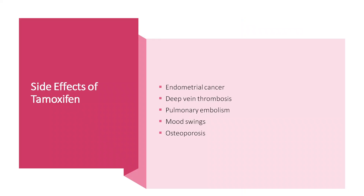Let's now list and discuss the main side effects of tamoxifen. Importantly, tamoxifen has been associated with endometrial cancer. It has been hypothesized that tamoxifen may act as an antagonist in breast tissue while being a partial agonist in the endometrium, which may explain this association. In addition, tamoxifen has been linked with deep vein thrombosis, pulmonary embolism, and mood swings. Finally, since estrogen plays a key role in bone remodeling regulation, an important side effect of tamoxifen is osteoporosis.